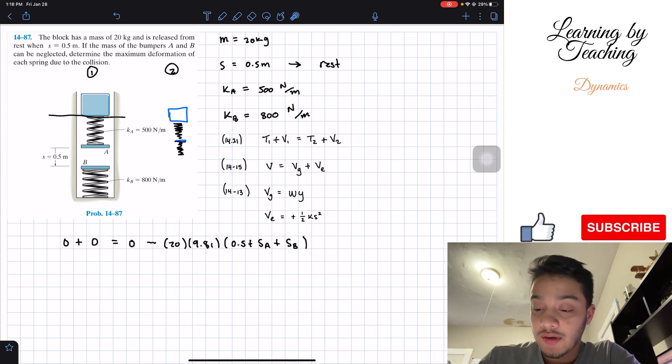Now we have to look for our elastic potential. We have two springs, so we have plus one half, first spring, spring A, k equals 500 times the amount that it got compressed, which is SA squared. Plus one half 800 for spring B and the amount that it got compressed, which is SB squared.